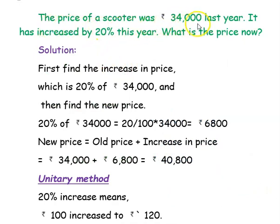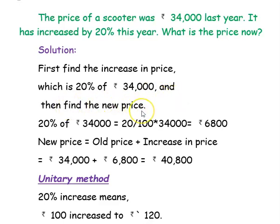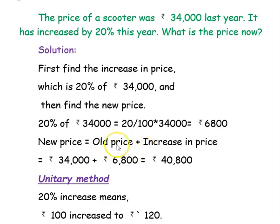The price of a scooter was ₹34,000 last year. It has increased by 20% this year. What is the price now? First, find the increase in price: 20% of ₹34,000 equals ₹6,800. Since it is an increase, add to the old price: ₹34,000 plus ₹6,800 equals ₹40,800.